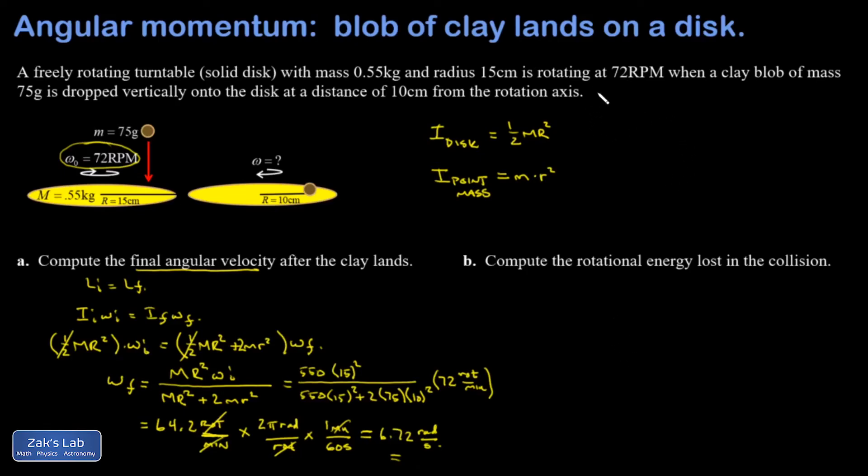Just as a side note here, so I don't run out of space, let's get our initial angular velocity converted as well. So 72 rotations per minute times two pi radians per rotation times one minute for every 60 seconds. And when I do this one, I get 7.54 radians per second.